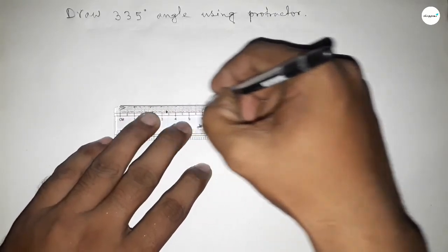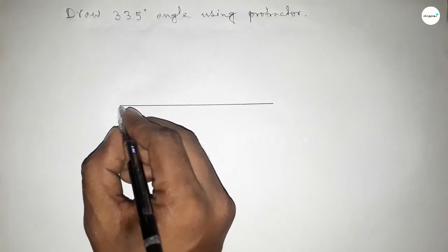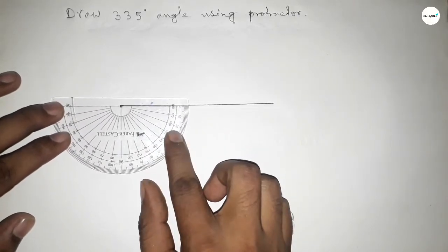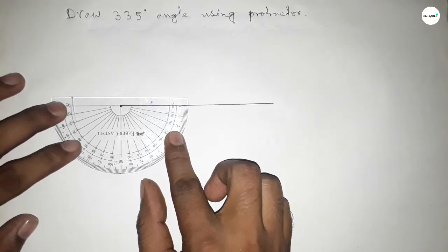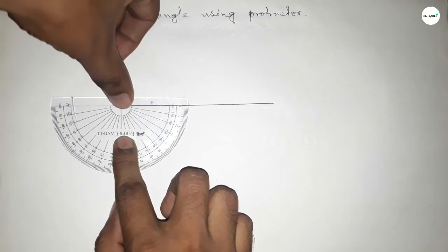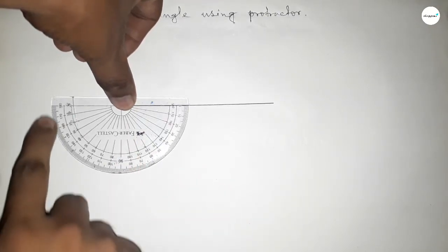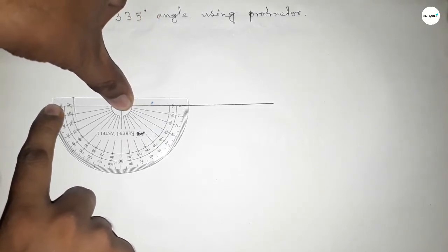First, draw a line. Next, mark a point where we'll draw the 335-degree angle. Now, put the protractor on the line perfectly this way. This is a 180-degree angle, but we have to draw 335 degrees.